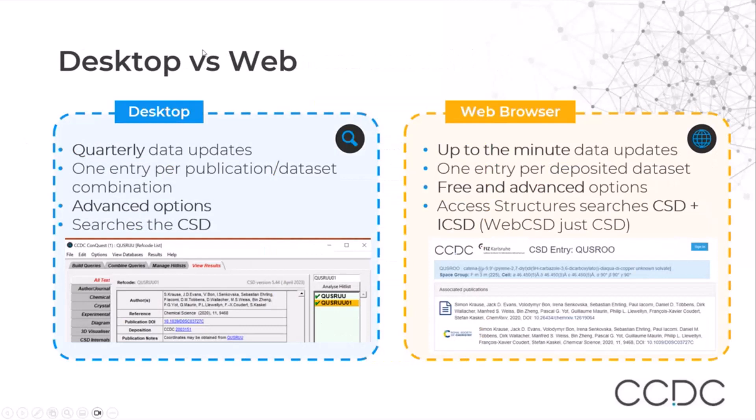To start, we want to show the difference between the desktop software Conquest and the web browser. Conquest has quarterly data updates. It has one entry per publication or dataset combination. It is licensed software and has advanced options for searching, and it searches the CSD. You also need to install Conquest and the CSD data on your machine.